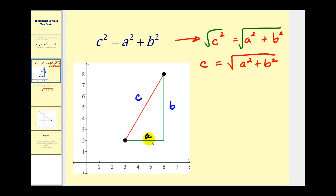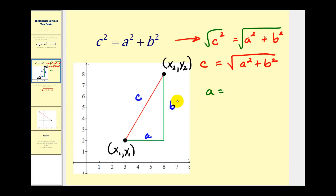Now remember that a is just the length of this leg here, and b is the length of this leg here. If this right triangle is on the coordinate plane, we could call the coordinates of this point x one, y one, and this point x two, y two. The length of side a would be determined by the distance between x sub one and x sub two, so a equals x sub two minus x sub one. The length of b would be determined by the y coordinates, which would be y sub two minus y sub one, so b equals y sub two minus y sub one.